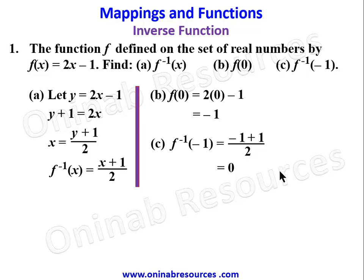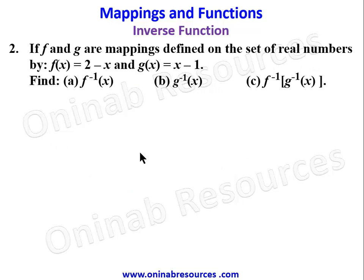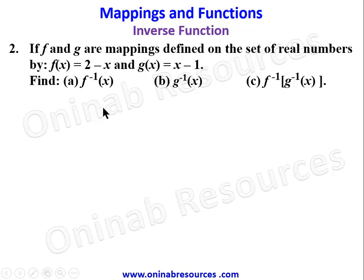We now go to problem 2. If f and g are mappings defined on the set of real numbers by f(x) = 2 - x and g(x) = x - 1, find: (a) f⁻¹(x), (b) g⁻¹(x), and (c) the composite function f⁻¹∘g⁻¹(x), where g⁻¹(x) is applied first then f⁻¹.